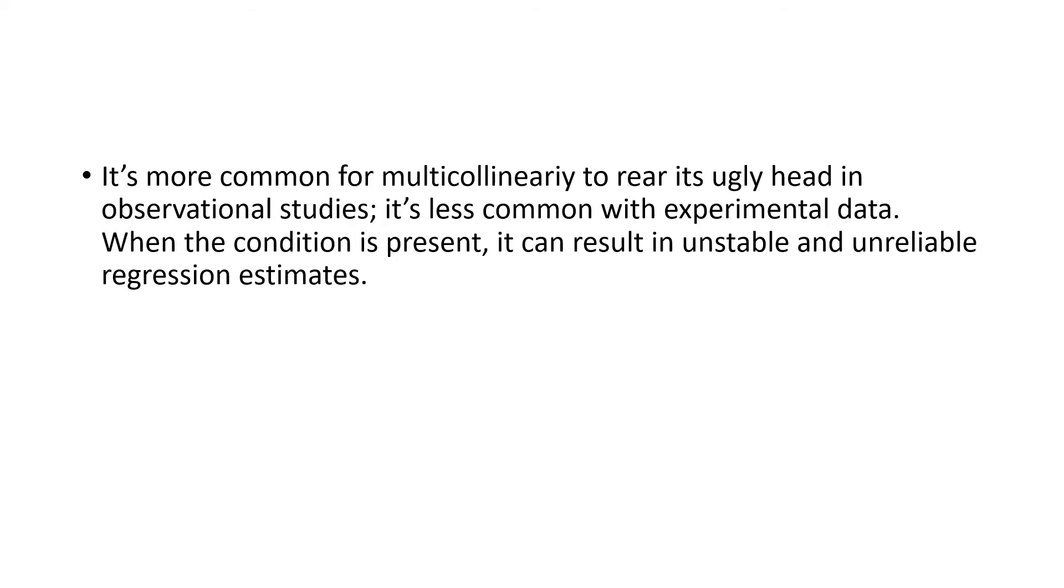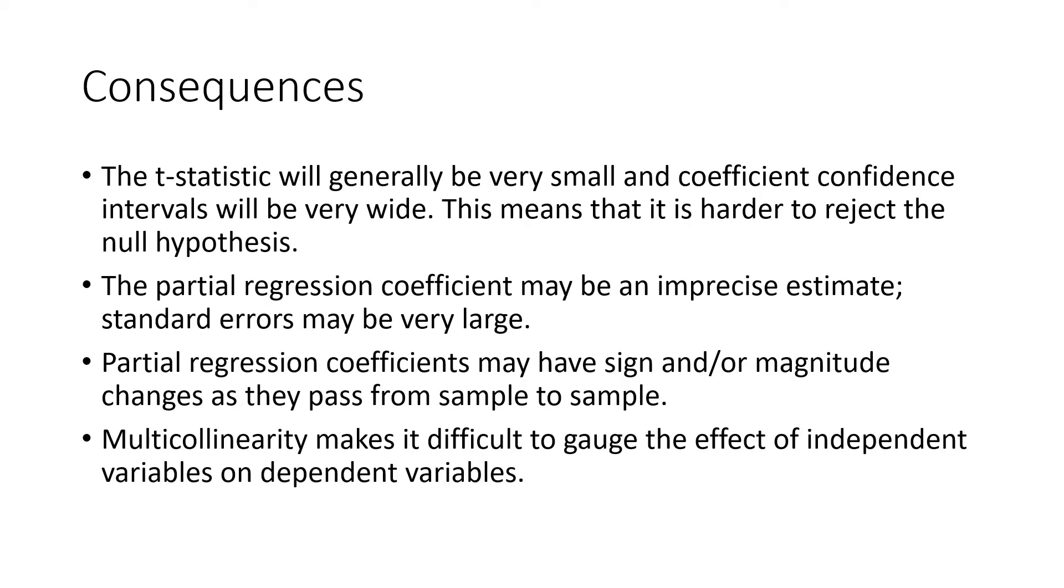It is common for multicollinearity to show its face in many observational studies, while it's less common with experimental data. So we can see that if you have the problem of multicollinearity, your model will be yielding you unstable and unreliable regression estimates. As a result it will be having several consequences in your model. So what are the consequences which you have to face when you face a problem of multicollinearity in your model?